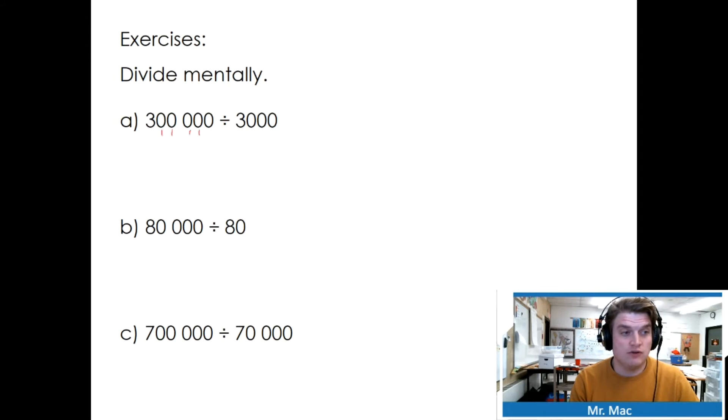Let's count the zeros: 1, 2, 3, 4, 5. And here we have 1, 2, 3. So that means we need how many more zeros? We need two. There's only three here and five here. Five zeros minus three zeros equals two zeros.